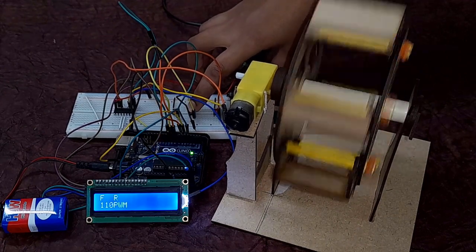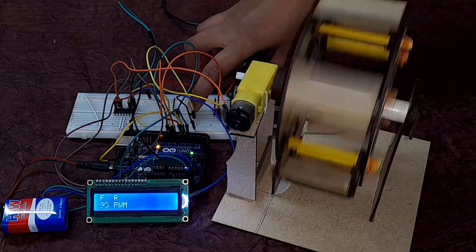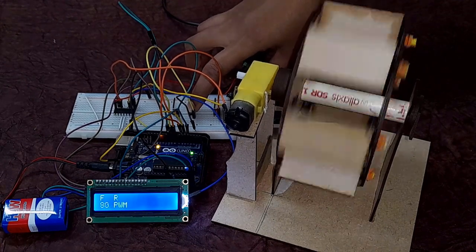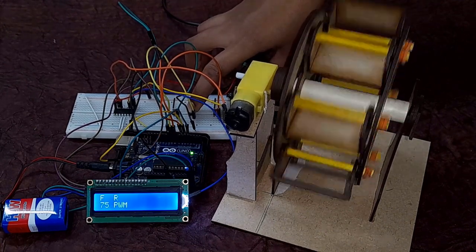Now we reduce the speed. The speed again reduces in steps of 5 and once it hits 75 you would see that it drops to 0.